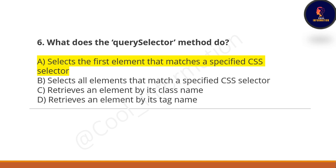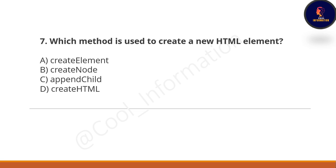Next question: Which method is used to create a new HTML element? Option A: createElement. Option B: createNode. Option C: appendChild. Option D: createHTML. The correct option is A — the createElement method is used to create a new HTML element.